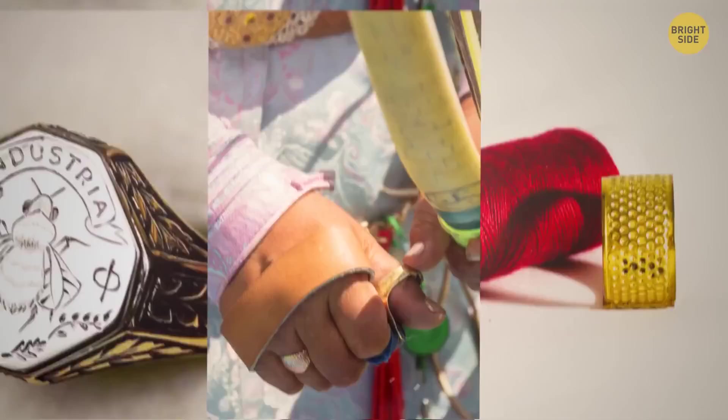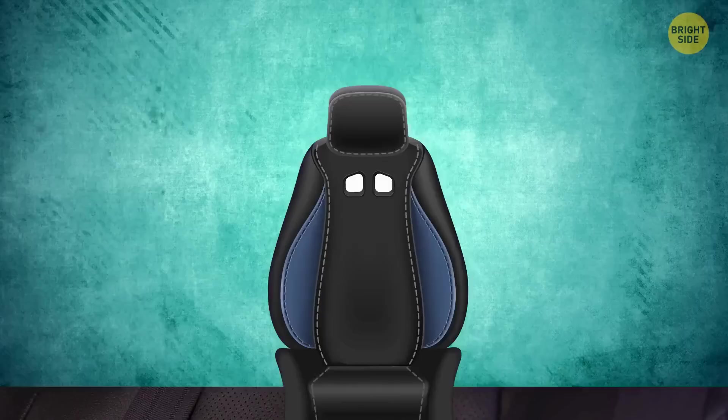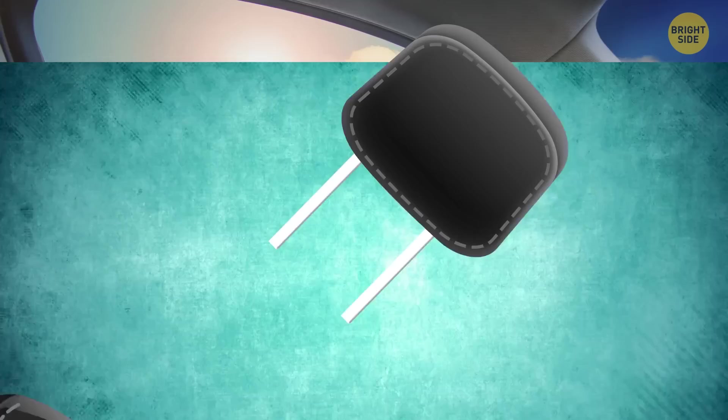Detachable headrests in cars are all about safety. If you pull it out of a seat, you'll see two pretty sturdy bars. If you ever get locked or trapped in a car, you can get out of there smashing the window with these bars.